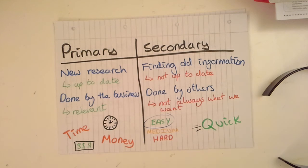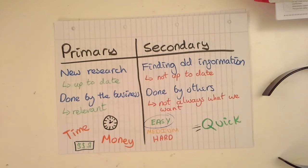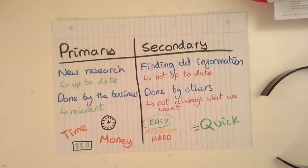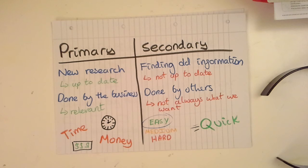This is the opposite to secondary research, which is research that's already been conducted — it's been done before, and it's research that we haven't done ourselves. An example could be looking at other companies' survey results, or seeing on the news that house prices are rising and then deciding to buy to let to get a decent return on your investment. Secondary research is essentially looking at information that others have already found.